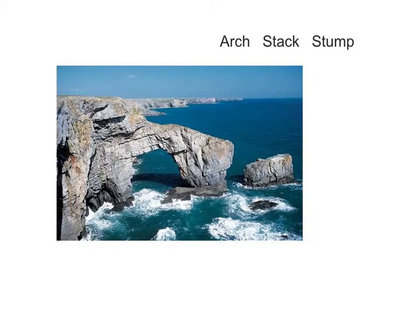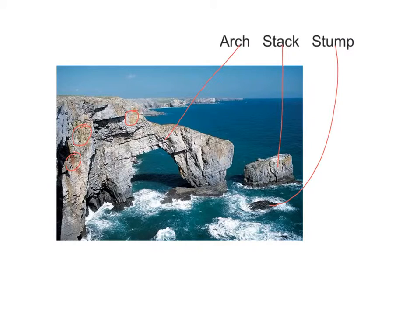Finally, for GCSE students, you can identify a well-formed arch, a stack, and a stump. One other thing you can spot is the reddish colours on the geology — probably evidence of oxidation — so you can include that all-important phrase: sub-aerial weathering, which weakens the geology.